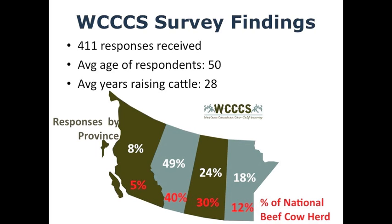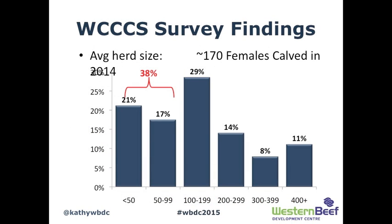By province, close to half the responses came from Alberta, 8% from BC, 24% from Saskatchewan, and 18% from Manitoba. For comparison, the national beef cow herd sits at about 40% Alberta, 30% Saskatchewan, 12% Manitoba, and 5% BC. Average number of females that calved in 2014 was about 170. On herd size, close to 40% had 100 cows or fewer, about 30% between 100 and 200, and the remainder at 200 or more.